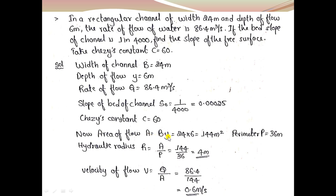For a rectangle channel section, area A = B×Y = 144 m². Perimeter P = B + 2Y = 36 m. Hydraulic mean radius R = A/P = 4 m. By the continuity equation, velocity V = Q/A = 0.6 m/s.